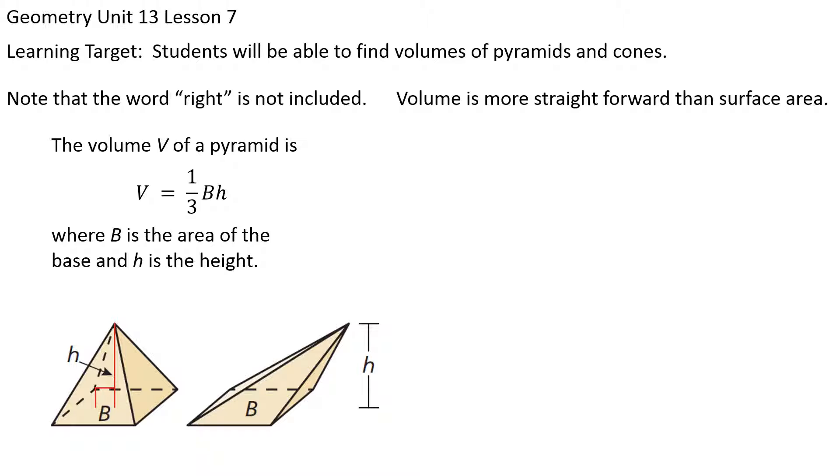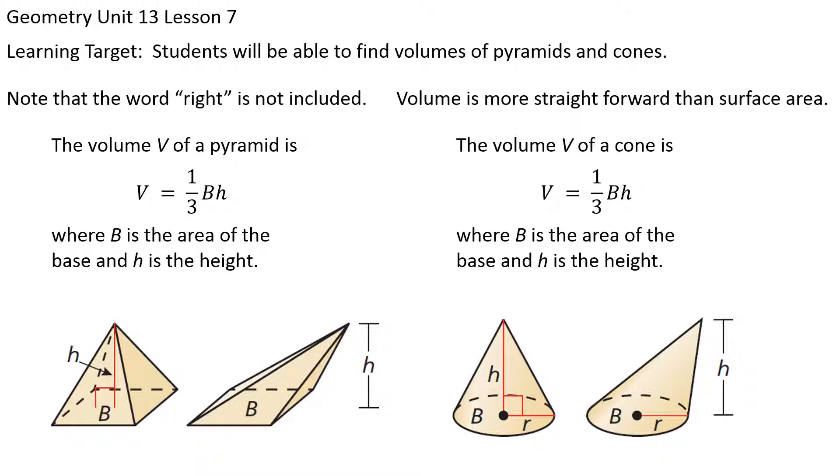Notice with the pyramid it's exactly one-third of the area of base times the height. Again, it does not matter if it's a right pyramid or oblique pyramid - it'll work just fine. Now when we get to the cone, again the cone is quite similar to what the cylinder was. Instead of area of the base times the height, it's exactly one-third times the area of the base times the height. The capital B is being used for the area of the base and then the lowercase h for the height.